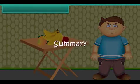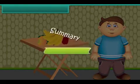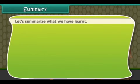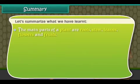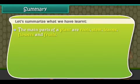Now friends, let's summarise what we have learnt. The main parts of a plant are roots, stem, leaves, flowers and fruits.